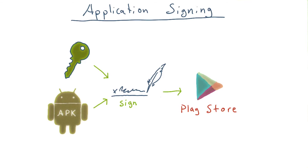Gradle automatically signs debug applications with a special debug key that allows our app to be installed on development devices. However, apps signed with a debug key can't be published to the Play Store.